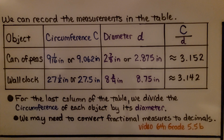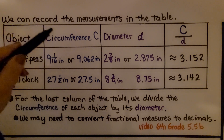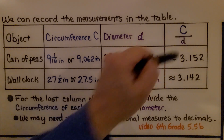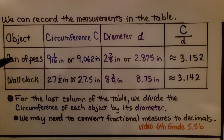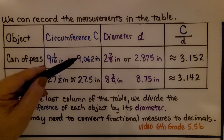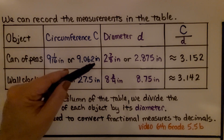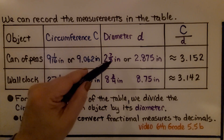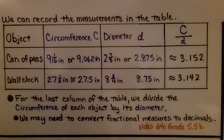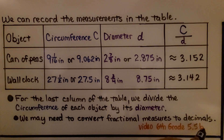We can record the measurements in a table with columns for the object, circumference (uppercase C), diameter (lowercase d), and then circumference divided by diameter. The can of peas had a circumference of nine and one-sixteenth inches, or as a decimal, nine point zero sixty-two inches. The diameter was two and seven-eighths inches, or two point eight seven five inches. We may need to convert fractional measures to decimals — I have a linked video from sixth grade math 5.5b where we learned how to go from fractions to decimals.